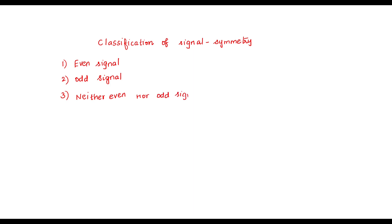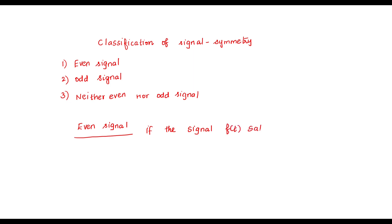First of all, I am going to explain about even signal. What is even signal? If the signal f of t satisfies the relation f of t is equal to f of minus t, it is known as even signal.